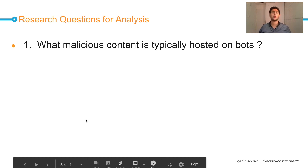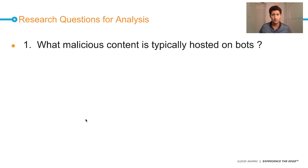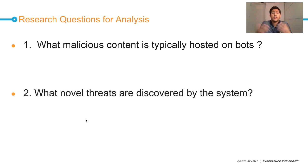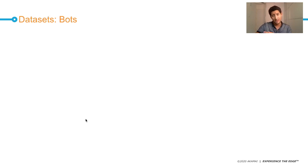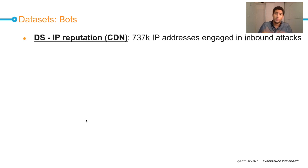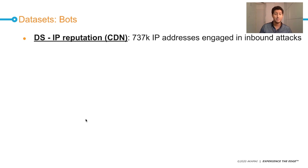The first question we ask is: what malicious content is typically hosted on bots? The second is: what new threat are we discovering with this technique? Starting with the data — on one hand, we have data from IP reputation, from the CDN, from the attackers of the CDN. From there, we extracted 700,000 IP addresses involved in inbound attacks — attacks coming from hackers to the victim, such as SQL injection, account takeover, DDoS, etc.